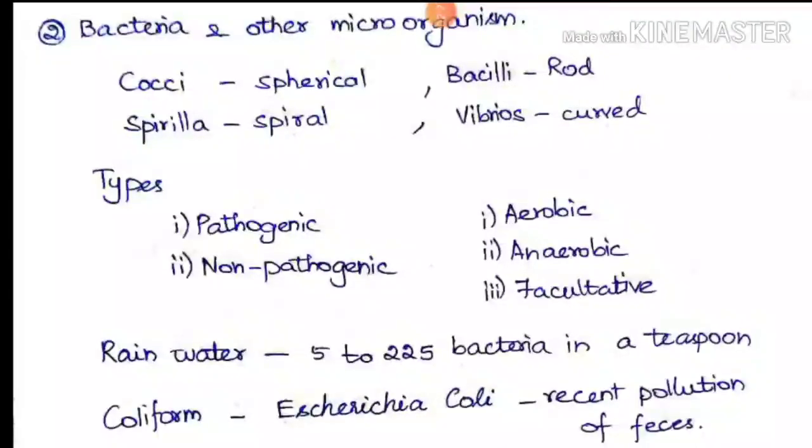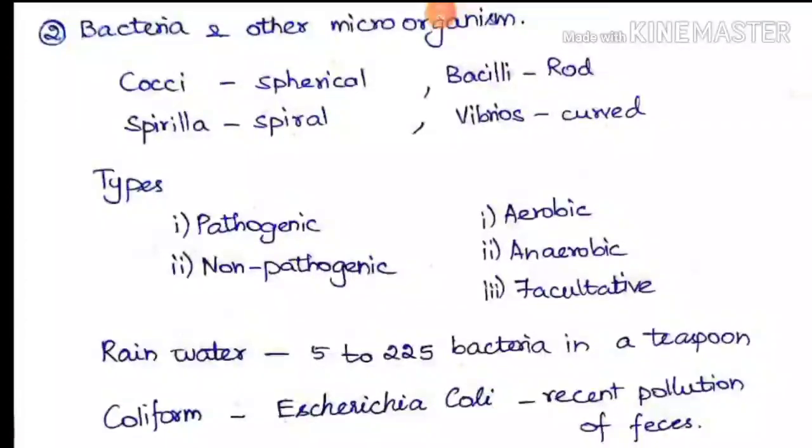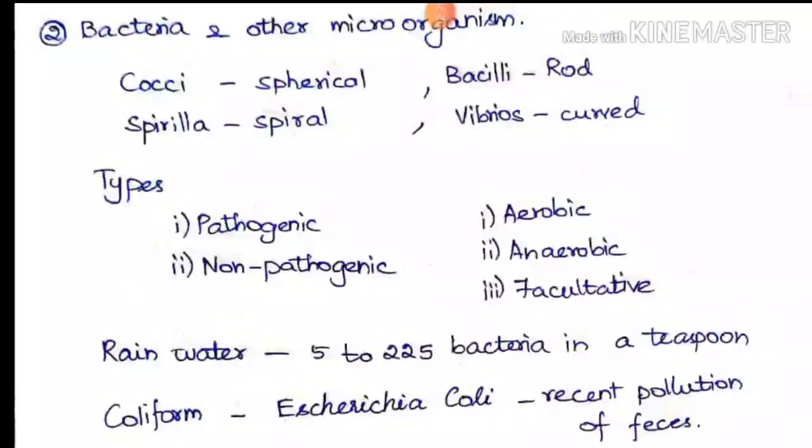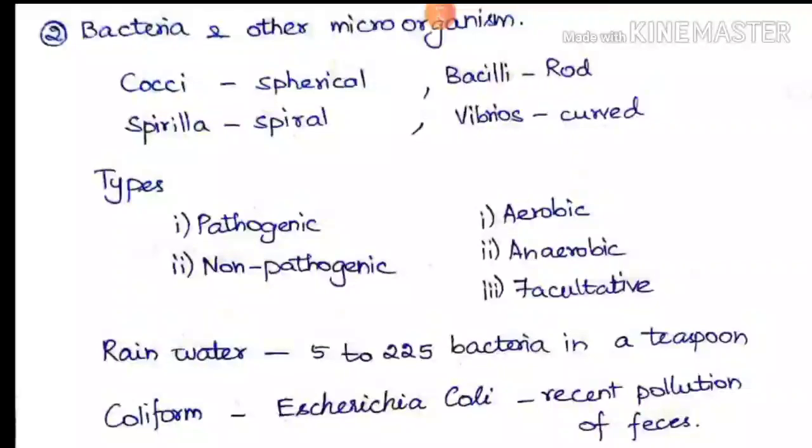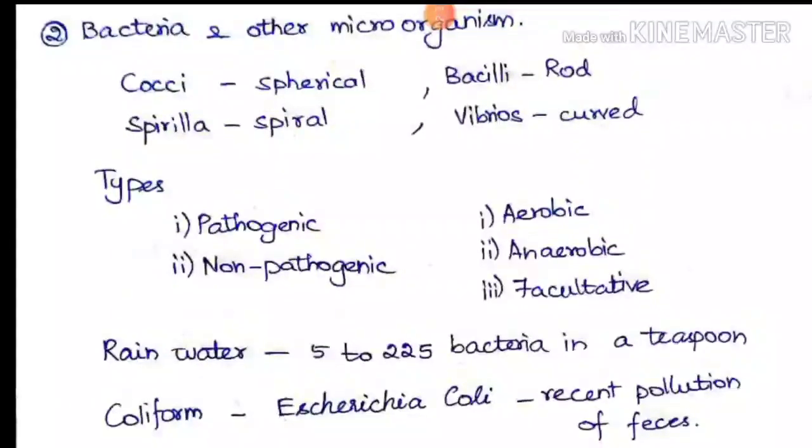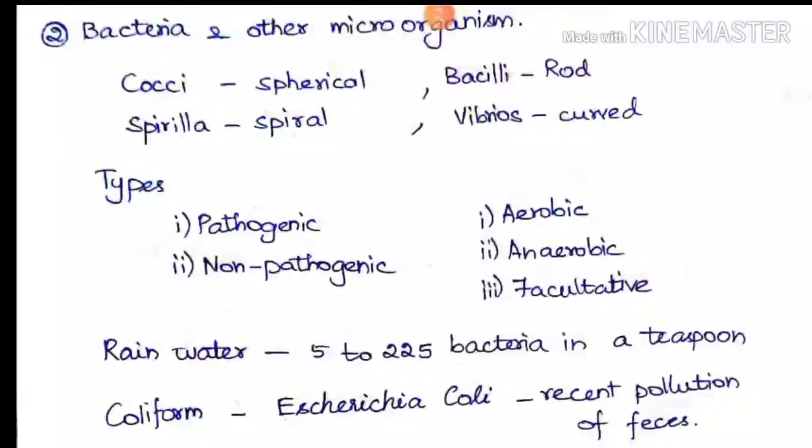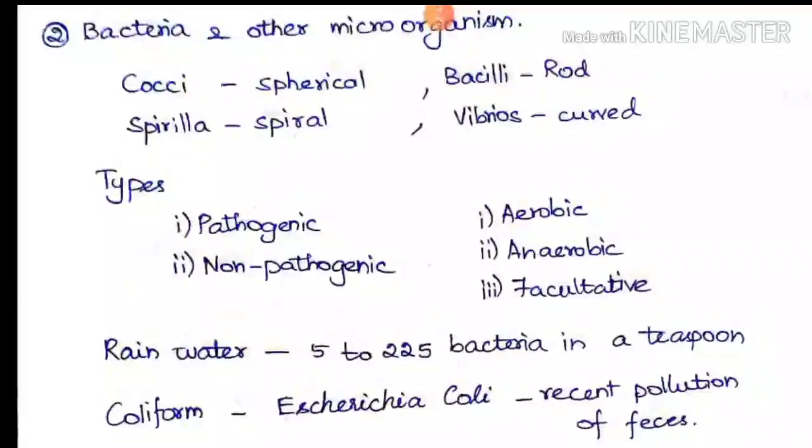The next is coliform. Coliform is a group of microorganisms. Escherichia coli is a type of microorganism present in human and animal intestines. It represents recent pollution of feces. If E. coli is present in water, it means recent pollution of feces is present, and it is the deciding factor for coliform identification.